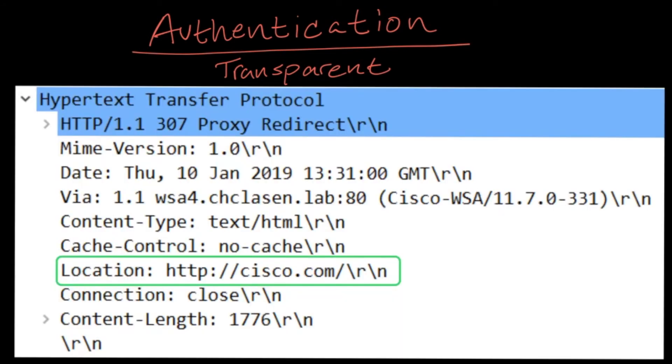The access logs in the web security appliance will show the original request, the redirect, the auth challenge, and the final redirect back to the original site. Once authenticated, the %m custom field in the access log will also show the authentication mechanism that was used.